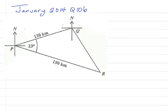We're asked to calculate correct to one decimal place. Part A asks us to calculate the distance QR. The first thing is that P, Q, R is a non-right angle triangle. The tools for solving a non-right angle triangle are the sine rule and the cosine rule. If you have two sides of a non-right angle triangle and the inclusive angle and you wish to find the length of the third side, it is a condition for applying the cosine rule.